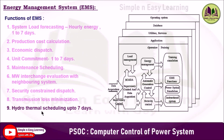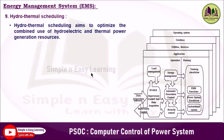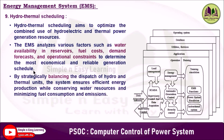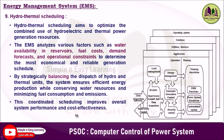The last function is hydrothermal scheduling. Hydrothermal scheduling aims to optimize the combined use of hydroelectric and thermal power generation resources. The EMS analyzes factors such as water availability in reservoirs, fuel costs, demand forecasts, and operational constraints to determine the most economical and reliable generation schedule. By strategically balancing the dispatch of hydro and thermal units, the system ensures efficient energy production while conserving water resources and minimizing fuel consumption and emissions. This coordinated scheduling improves overall system performance and cost-effectiveness.